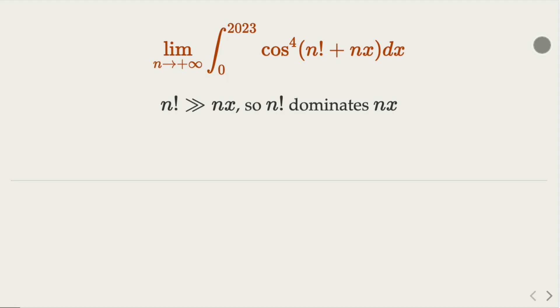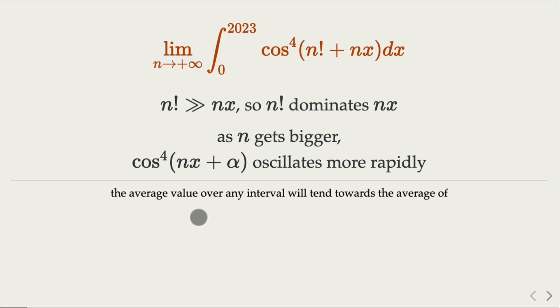Back to our problem, n factorial as n goes to infinity is going to be the dominating term. Now in the meantime, nx will make this function oscillate rapidly as n goes to infinity. So if you take the integral with this interval here from 0 to 2023, you notice that we just need to find out what is the average value for one period of the function, the fourth power of cosine x.